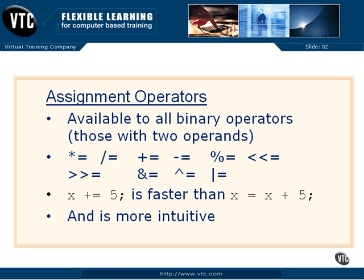The assignment operators are available to all binary operators. Remember, a binary operator is one that has two operands. It has one on either side of the operator, on the left and the right. Then the result of the operation is put to the left side of the equal sign into a result variable. A unary operator, as we remember, is one that only has a single operand.